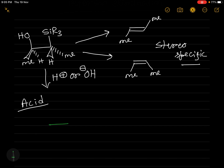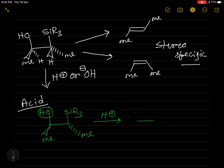In acidic medium, the substrate has a trialkyl silyl group on one side and an OH group on the other side, with one methyl group above the plane and another methyl group below the plane. In acid medium, the OH group gets protonated to give OH₂⁺, with the trialkyl silyl group on one side and the methyl groups arranged accordingly.